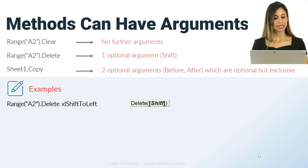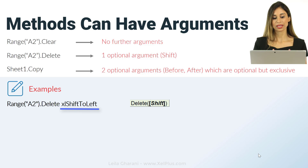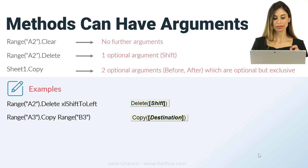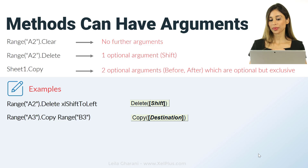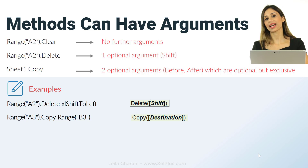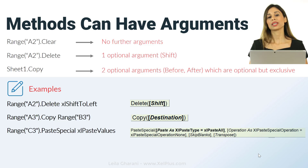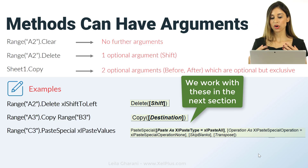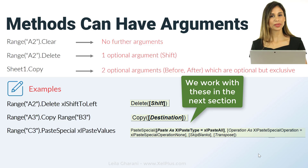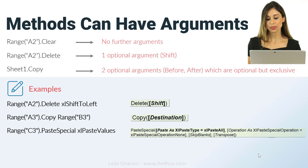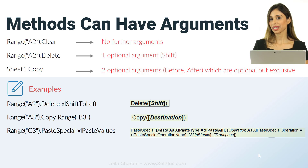Let's do some more examples. If we say range(A2).delete and we want to specify how the delete should happen, we put a space and then the argument. If we want to copy a range, we can say where we want to copy it to using the destination argument of the copy method — so everything stays on one line and we don't need to say .copy and then .paste separately. We also have the paste special method with all the same arguments available in Excel, such as paste values, paste formatting, or paste as transpose.